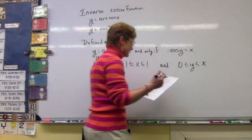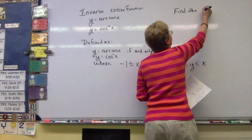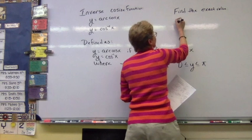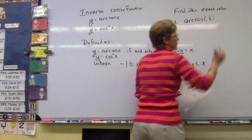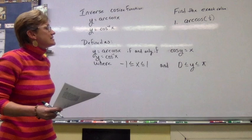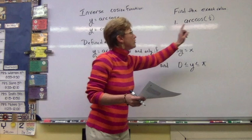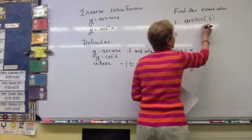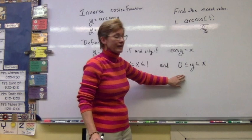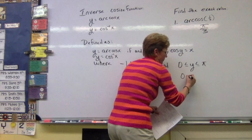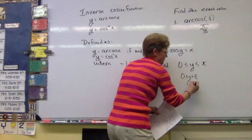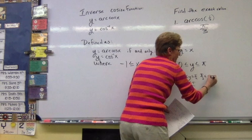Let's find the exact value for arc cosine of one half. Zero to pi over two puts us in quadrant one, and pi over two to pi puts us in quadrant two. For arc cosine of one half, we're looking for the first quadrant angle where cosine equals one half — that is pi over three.